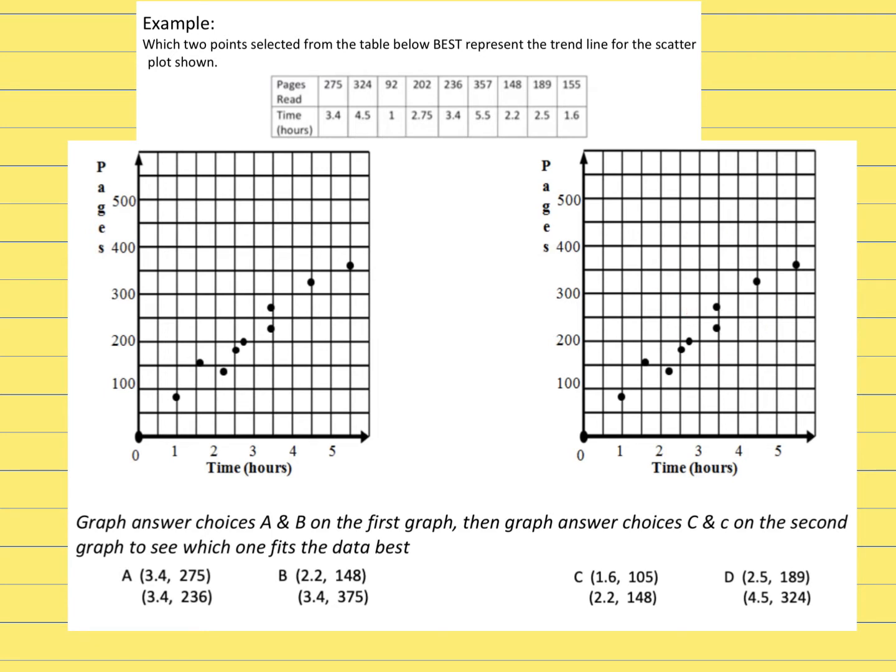What we want to do is draw two of the lines over here. So choice A and choice B. I'll label them. Then on this graph, which is the exact same one, I'm going to plot answer choice C and answer choice D.